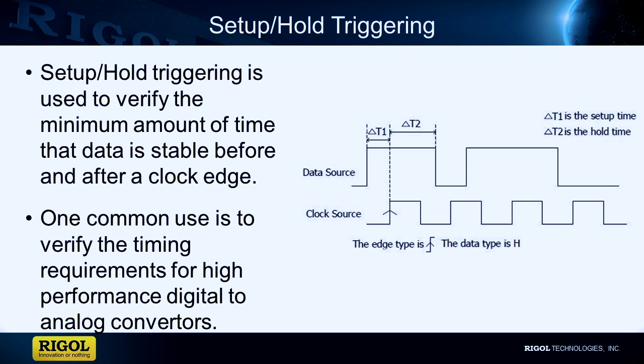Setup time is the minimum time data needs to be stable before a clock edge, and hold time is the minimum time data needs to be stable after a clock edge. Signal transitions outside these minimum requirements will result in a setup and hold violation.